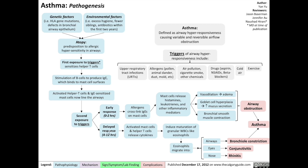The delayed response, which happens between the 4th to the 12th hour after exposure to the trigger, involves activated mast cells and helper T cells releasing cytokines that then induce the maturation of granular white blood cells, such as eosinophils. The eosinophils migrate into the airways, causing bronchial constriction; to the eyes, causing conjunctivitis; and to the nose, causing rhinitis. The bronchial constriction, in addition to the airway obstruction, are components of asthma. The conjunctivitis and rhinitis are associated complications.